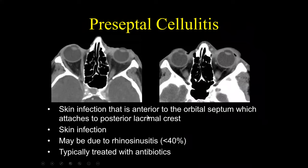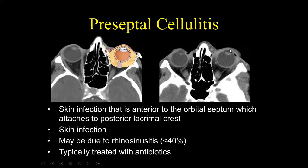Preseptal cellulitis is a skin infection anterior to the orbital septum. The orbital septum attaches to the posterior lacrimal crest, so any infection anterior to the posterior lacrimal crest is preseptal cellulitis. On this image we can see diffuse preseptal cellulitis that does not extend posteriorly to the posterior lacrimal crest — by definition, this is preseptal cellulitis.